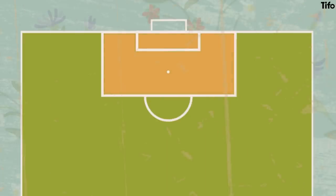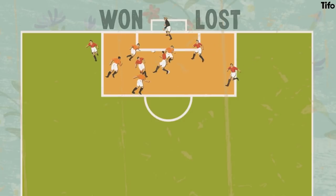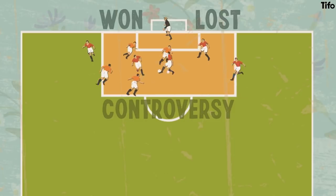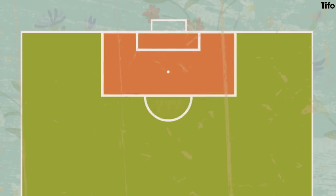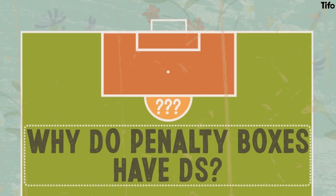The penalty box is where football matches are won and lost. It's where goals are scored, where dramatic cup ties end, and where controversy most often occurs. But while everyone knows what the penalty spot is for and what committing a foul inside the box means, fewer know why it has a semi-circle at its head. So, why do penalty boxes have Ds?